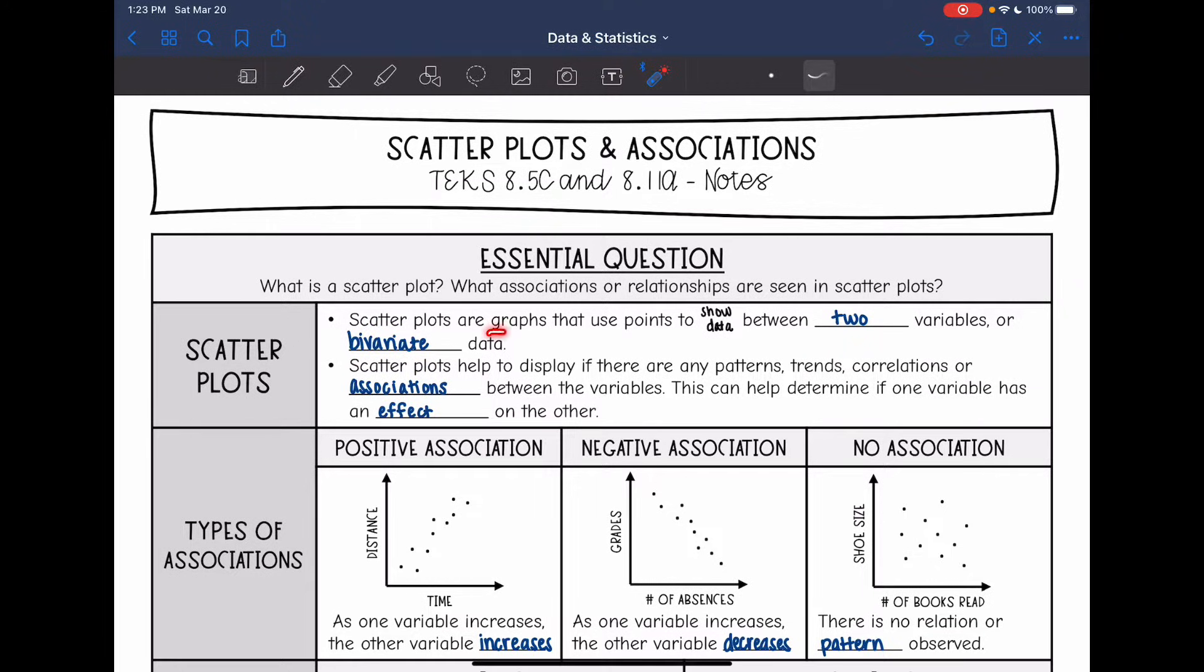Scatterplots are graphs that use points to show data between two variables or bivariate data. You'll hear this word bivariate data, it just means two variables. So we're going to be comparing two things.